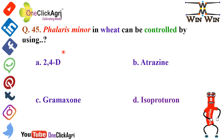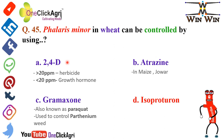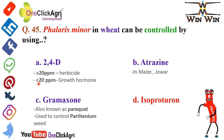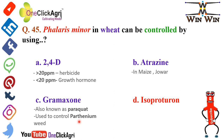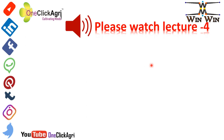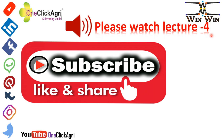Question number 45: Phalaris minor in wheat can be controlled by using Isoproturon. Other options: 2,4-D — if concentration is greater than 20 ppm it acts as a herbicide; if less than 20 ppm it acts as a growth hormone. Atrazine is used in maize and jowar to control weeds. Gramaxone, also known as Paraquat, is a non-selective herbicide mostly used for control of Parthenium.